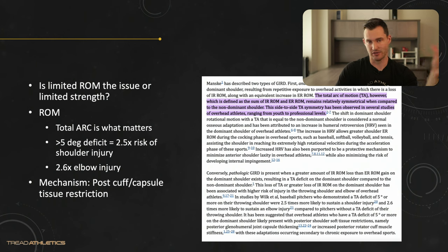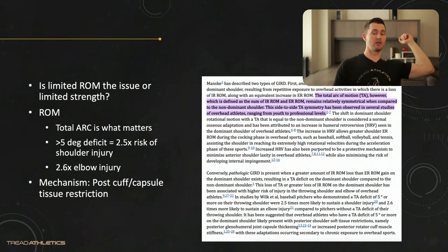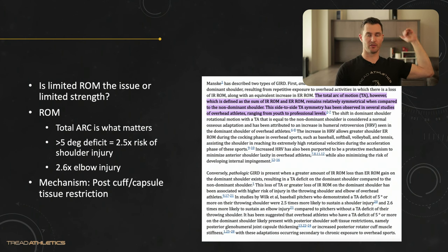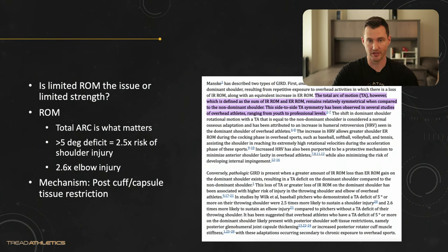It's not considered an actual issue unless the total arc of motion is significantly different between sides. If you have 10 less degrees of IR on your throwing side and 10 more degrees of ER, that's a normal adaptation. But if your total arc is 140 on your throwing side and 180 on your non-throwing side, that starts to get into what they classify as pathological. Pathologic GIRD is present when the amount of IR range of motion loss is greater than the ER range of motion gain on the dominant shoulder, resulting in a deficit compared to the non-dominant shoulder.